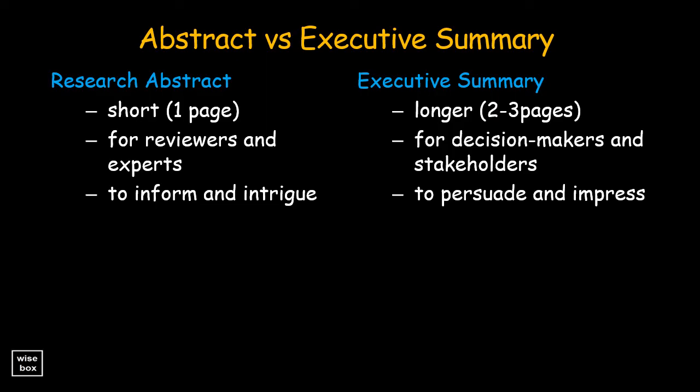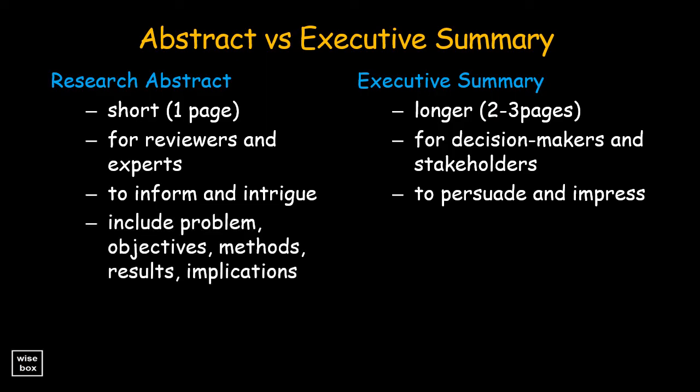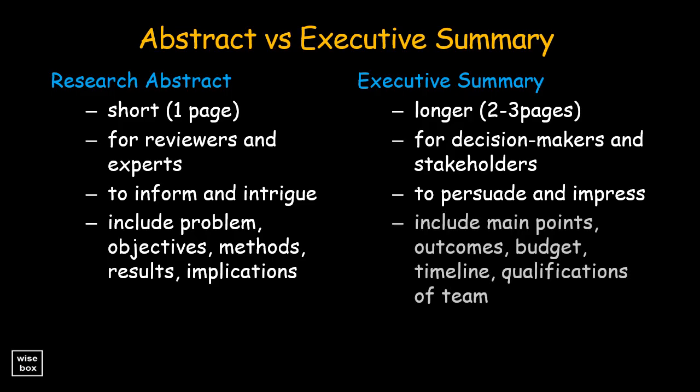An abstract should include the main problem, objectives, methods, results, and implications of a project, while an executive summary should include the main points, outcomes, budget, timeline, and qualifications of a team.